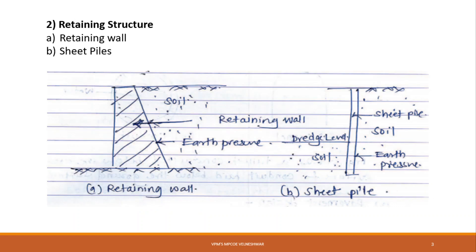Next is retaining structures. When sufficient space is not available for a mass of soil to spread, soil has a natural tendency to spread due to its self-weight. When there is not sufficient space for spreading, we provide a structure to protect against the sliding of soil. That structure is called a retaining structure. A structure is required to retain the soil and keep it at different levels on either side.